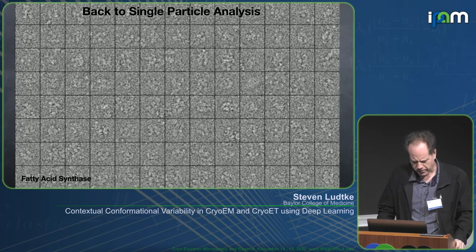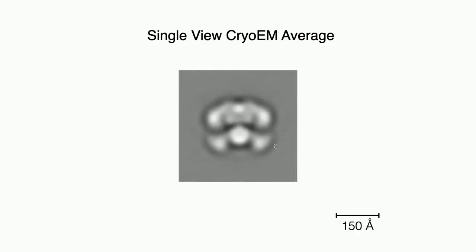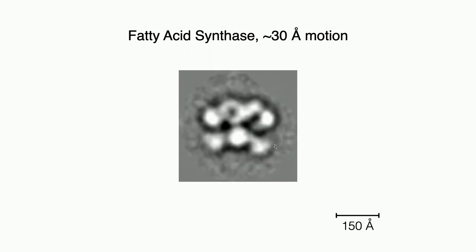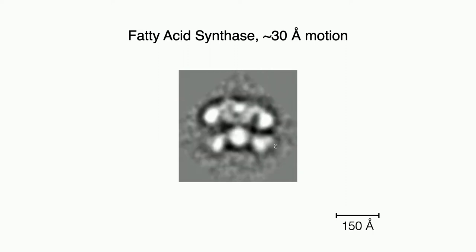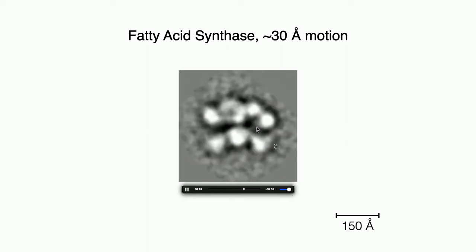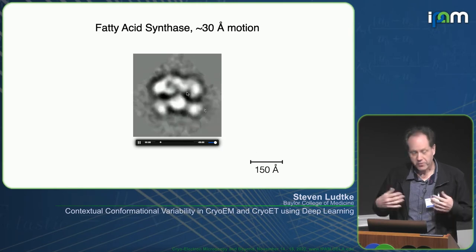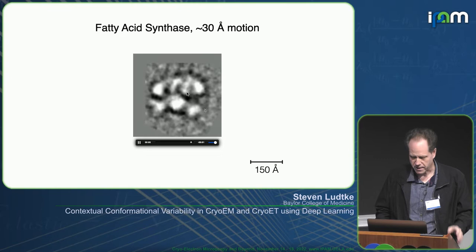Stepping back to single-particle analysis, here's an example I've also used 14 years ago: fatty acid synthase, one of the most dynamic molecules I know of. This multi-enzyme complex has seven different enzymatic activities lining two pockets, and to visit all of them the substrate has to bounce all around in space while the whole complex moves to adapt. When you look at the cryo-EM data, the map was very blurry. This is an example of something that requires good variability analysis.